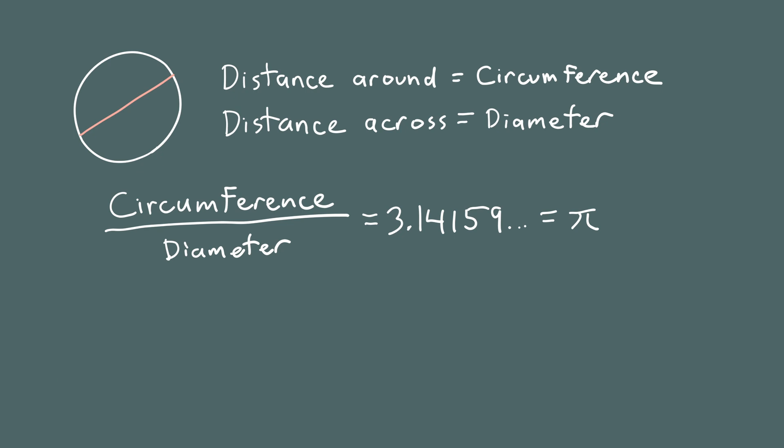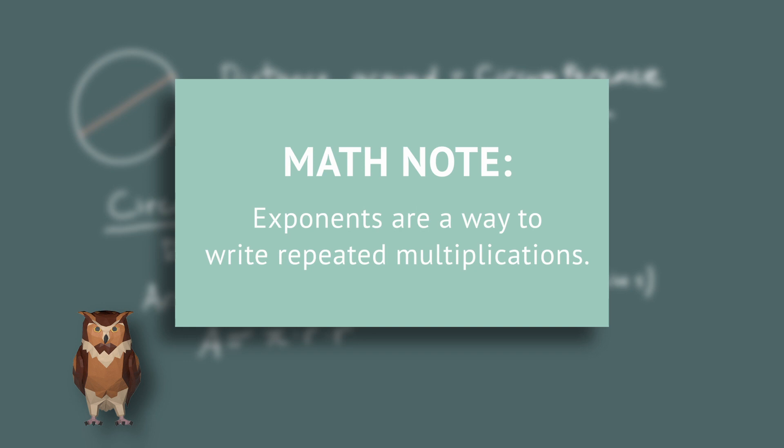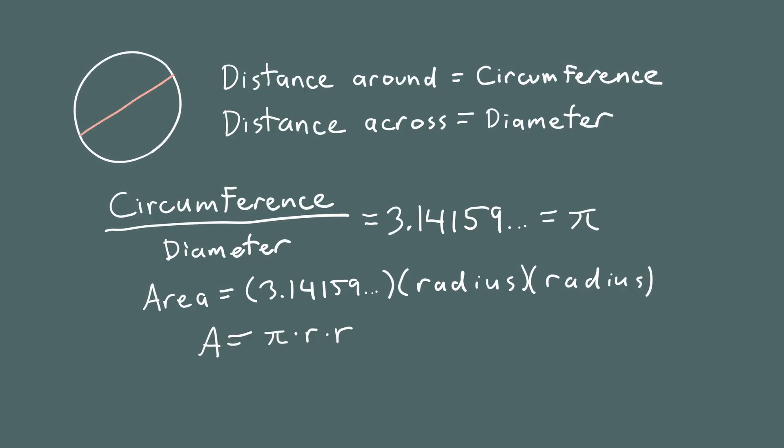Rather than always having to write 3.14 or 3.14159, etc., you can just write the Greek letter pi. And to demonstrate how much of a time saver it is to use letters to stand for numbers, let me write down the formula for the area of a circle once using words and no symbols, and the other using letters. The area of a circle is pi times the radius squared. But if we use letters to stand for all parts of this formula, we can save ourselves a whole lot of writing. Instead of the word area, let's just use the letter A. And instead of the number 3.14159, let's use the Greek letter pi. And instead of the word radius, let's use the letter R. And don't forget, exponents are a way to write down repeated multiplication. So instead of pi times R times R, we can simply write down the area is pi times R squared.